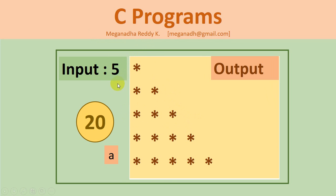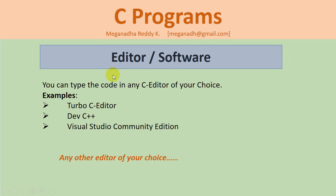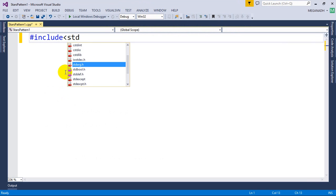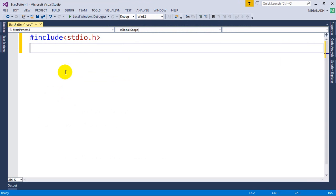As usual, you can use any editor of your choice — Turbo C, Dev C++, or any editor you are comfortable with that has a compiler. I'm going to use Visual Studio Community Edition, which is free from Microsoft. So let's get started. I'm going to write first include stdio.h.